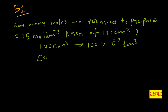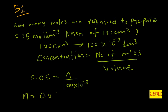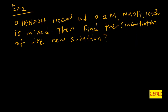We use concentration equals number of moles divided by volume. We know the concentration is 0.05, so 0.05 equals n divided by 100 × 10⁻³. Therefore n equals 0.05 multiplied by 100 × 10⁻³, which equals 0.005 moles. So we need 0.005 moles of NaOH (sodium hydroxide).